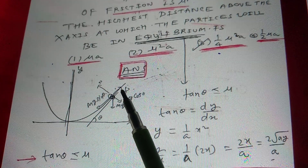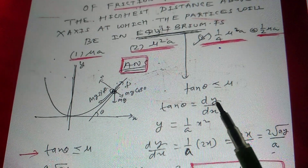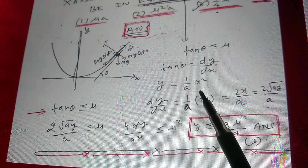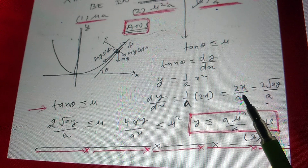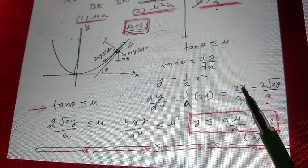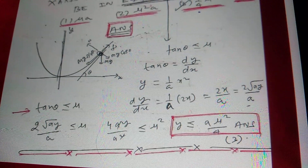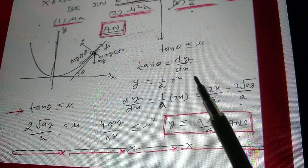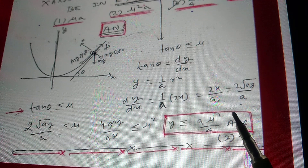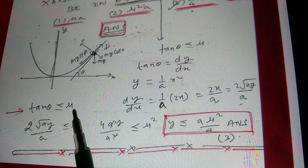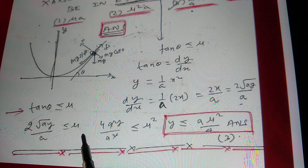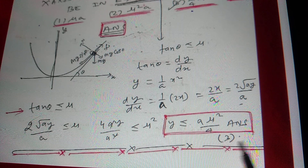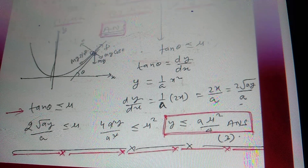The equation of the parabola is x = A·y², so y = (1/A)x². Differentiating: dy/dx = 2x/A. For limiting equilibrium: tan θ = 2x/A ≤ μ. Substituting x = √(Ay): 2√(Ay)/A ≤ μ. Squaring both sides: 4Ay/A² ≤ μ², giving y ≤ Aμ²/4. The maximum height is y_max = Aμ²/4.